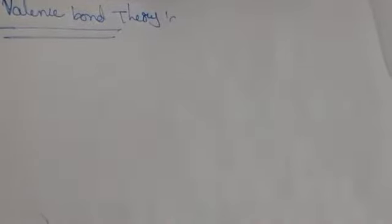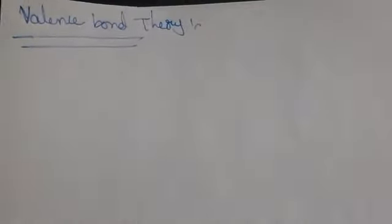Hello students. In the previous class we discussed about the VSEPR theory. Today I'm going to explain Valence Bond Theory. Valence Bond Theory was proposed by Heitler and London to explain the shapes of covalent molecules, bond angles, and bond lengths.